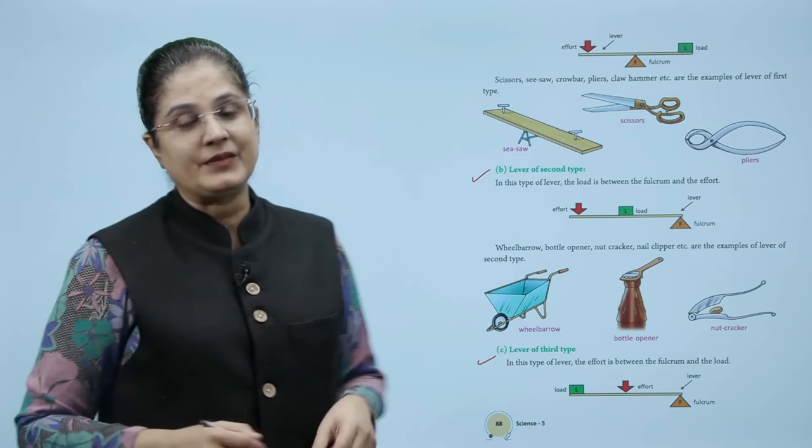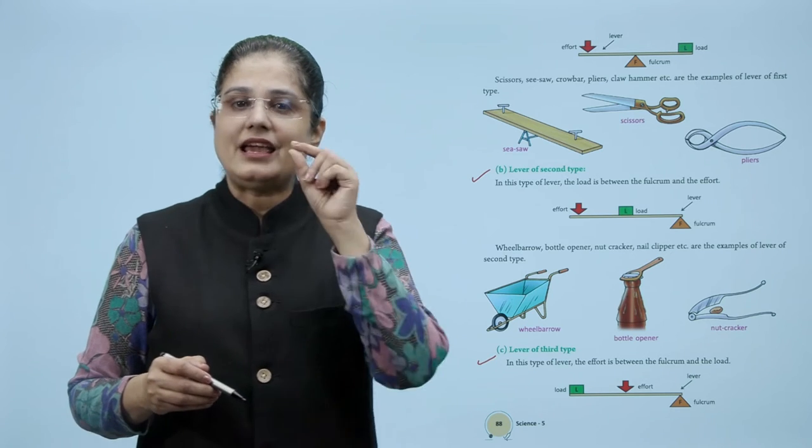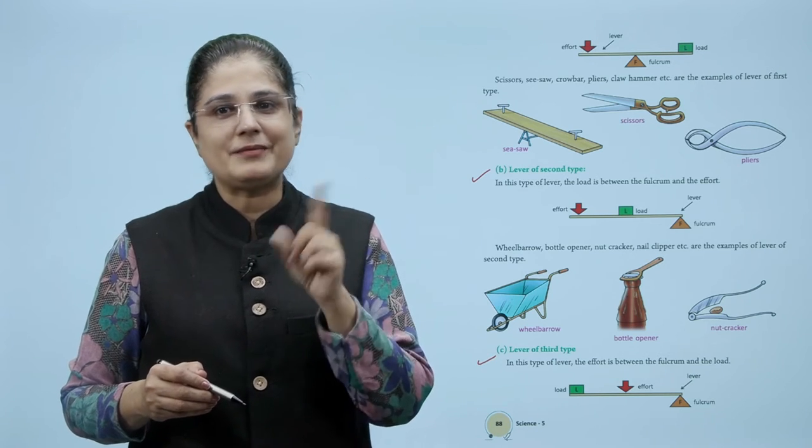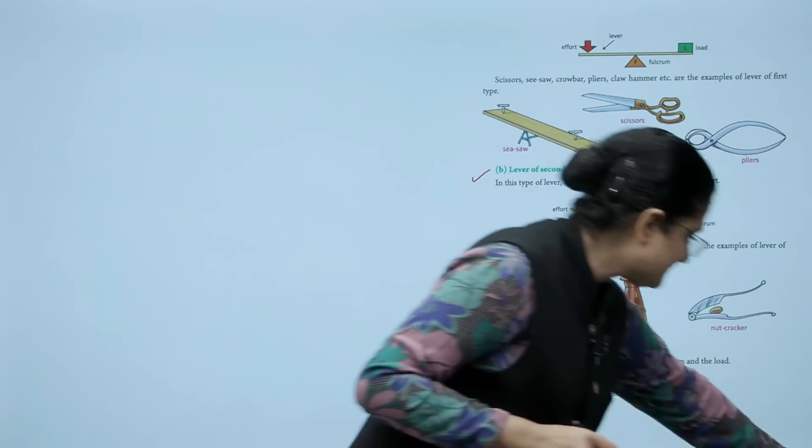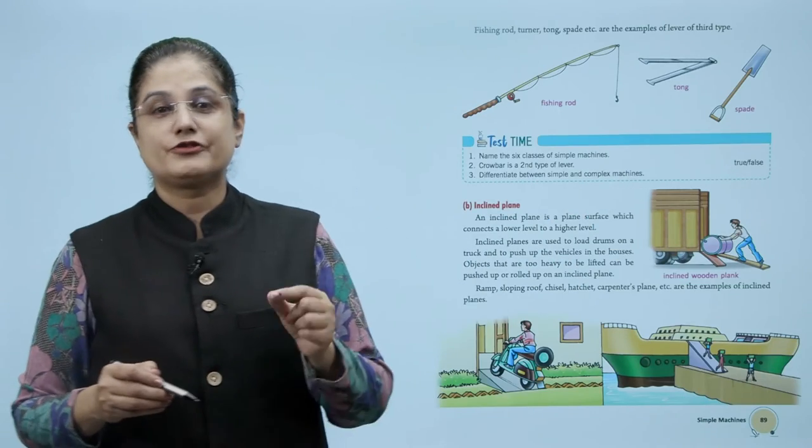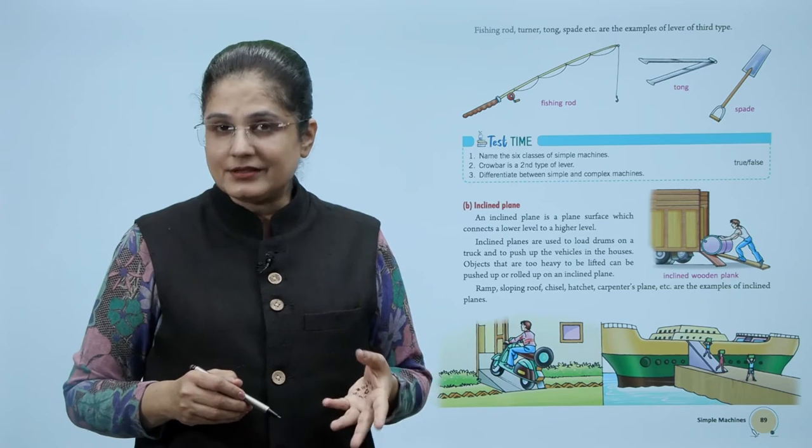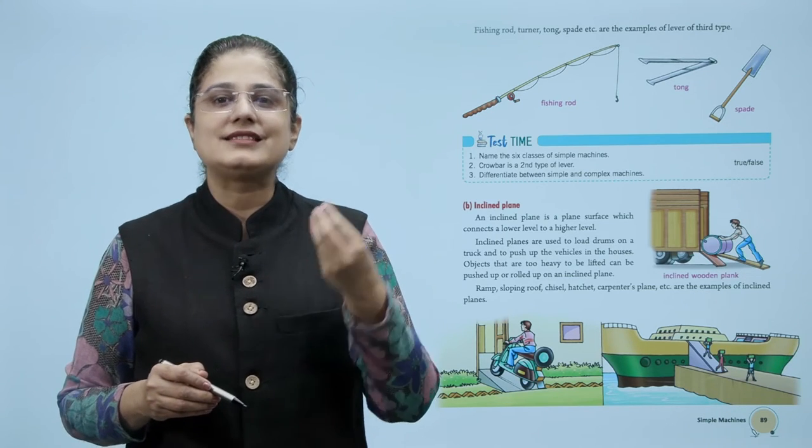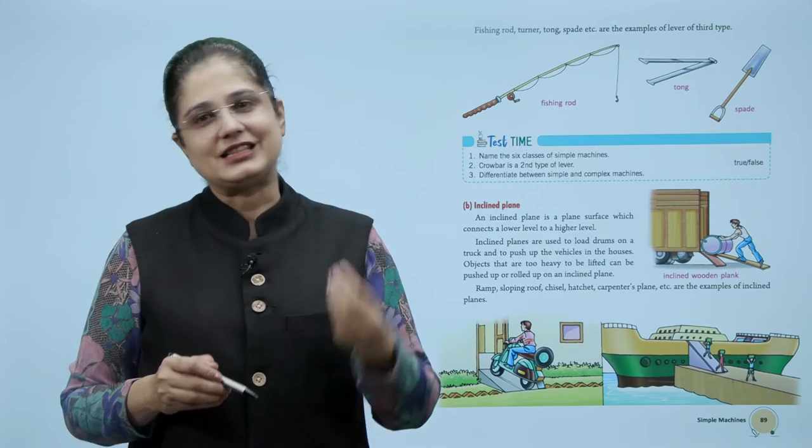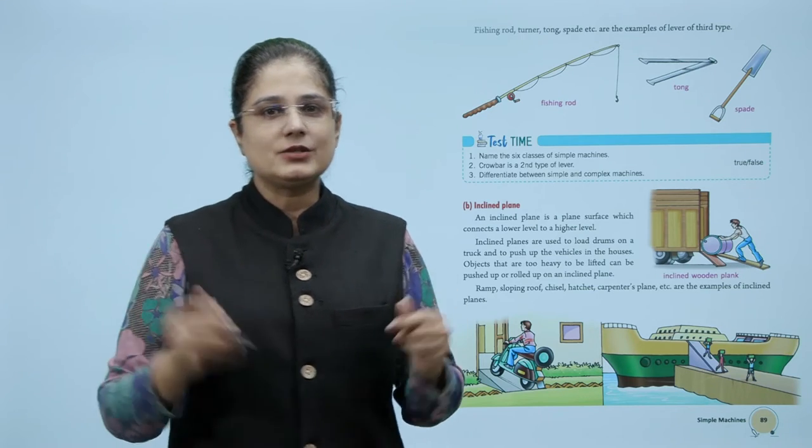Now comes the lever of the third type. In this type, the effort is between the fulcrum and the load. Fishing rod, turner, tongs, and spade are examples of levers of the third type.